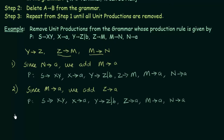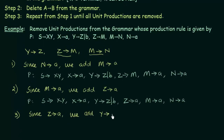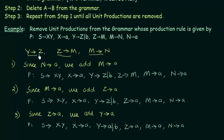The last unit production is Y gives Z. In order to remove that, we look at the latest production rule and see that Z gives A. Since Z gives A, instead of Y gives Z I can write Y gives A. Since Z gives A, we add Y gives A to our production. The new production rule becomes: S gives XY, X gives A, Y gives A and also B, Z gives A, M gives A, and N gives A. We have successfully removed Y gives Z.